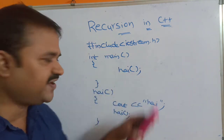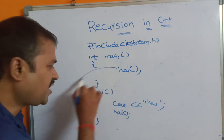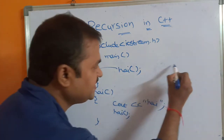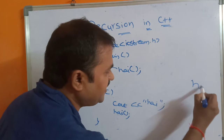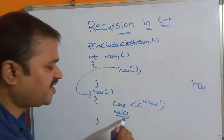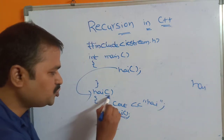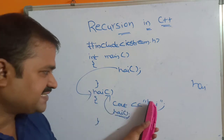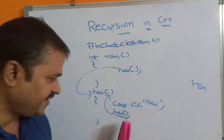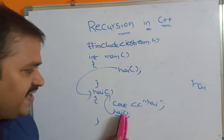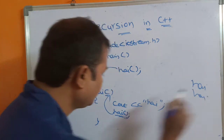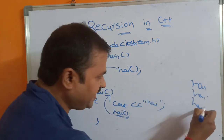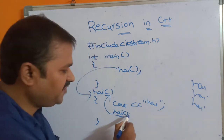From the main function we are calling the high function, so control goes to the high function. Next, cout << "high" — this message will get printed. Then high function is called again, so once again control goes to the high function. cout << "high", this message will get printed. Once again we have called the high function, so control goes to the high function definition, and once again 'high' gets printed.